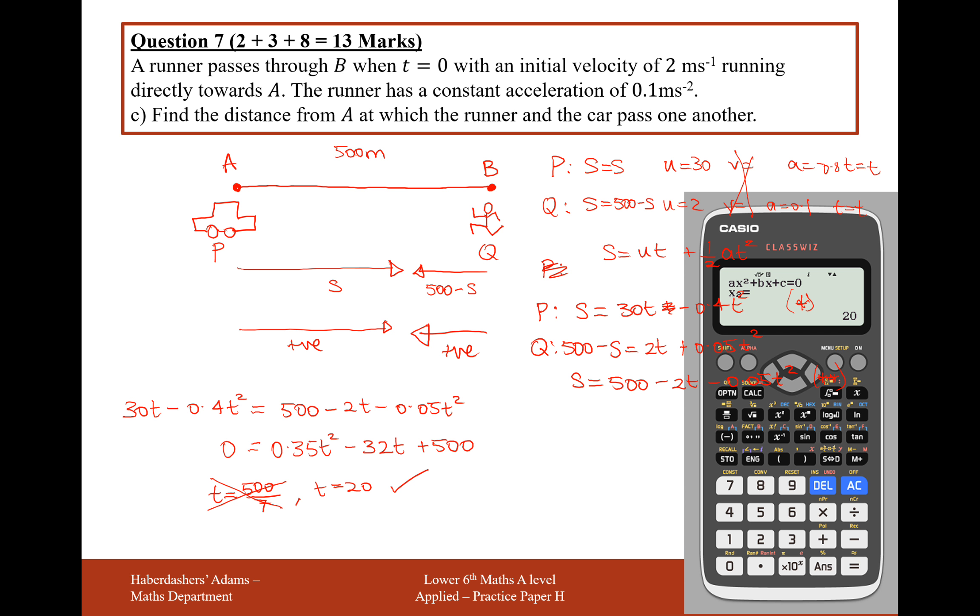What we can now do is plug 20 in to the distance from A, so I'll use my P equation here, that was 30T minus 0.4T squared. We're going to plug 20 into the equation for P where T is, and we're going to get 440 metres. So the distance from A at which the runner and the car pass each other is 440 metres.